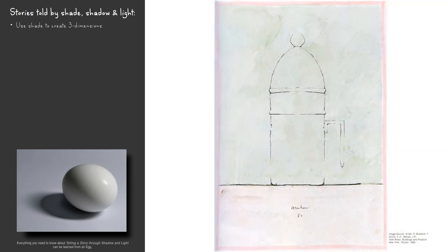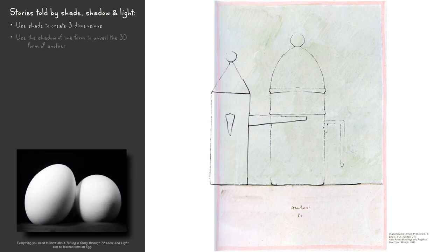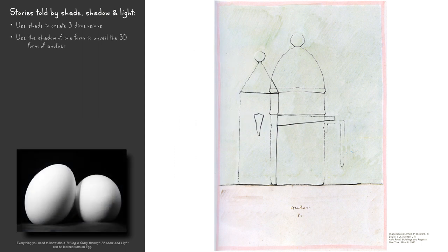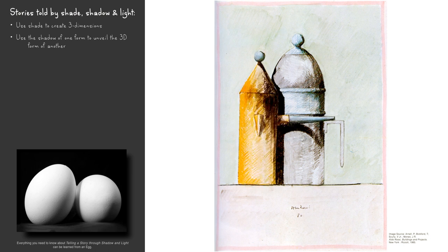This drawing by architect Aldo Rossi reveals another way to tell a story through shadow and light. By placing two forms next to one another, we can use the shadow of one form to unveil the three-dimensional form of the other. In this example, the projected shadow of the handle of the left coffee pot shows us that the right coffee pot is cylindrical.